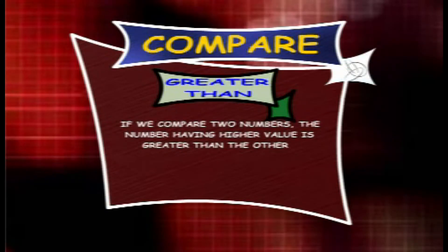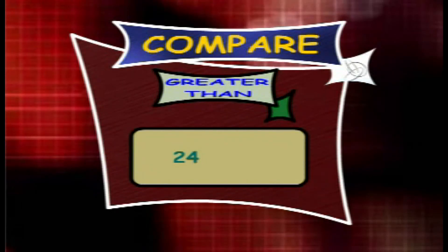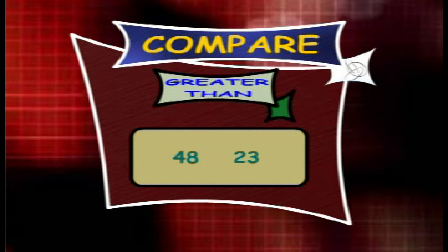Greater than: if we compare two numbers, the number having the higher value is greater than the other. The sign for greater than is >. For example, 9 is greater than 4, 24 is greater than 19, 45 is greater than 35, 77 is greater than 56, 67 is greater than 34, 48 is greater than 23.